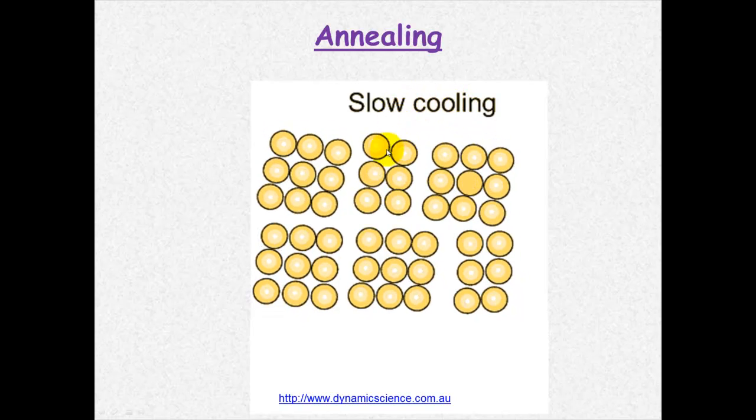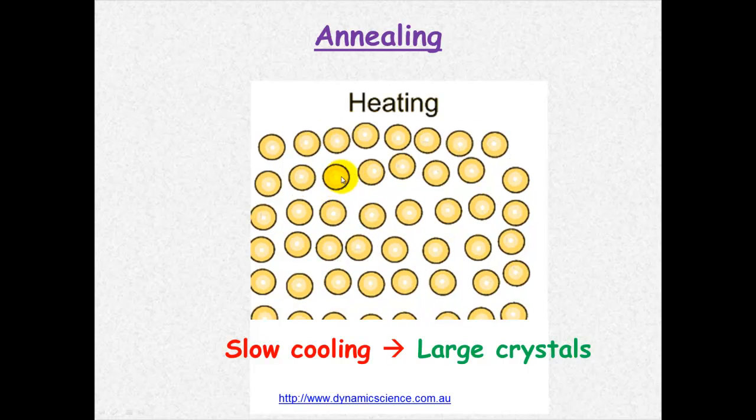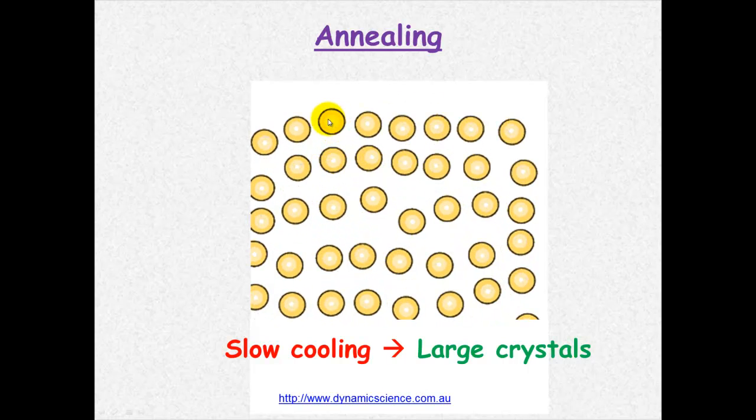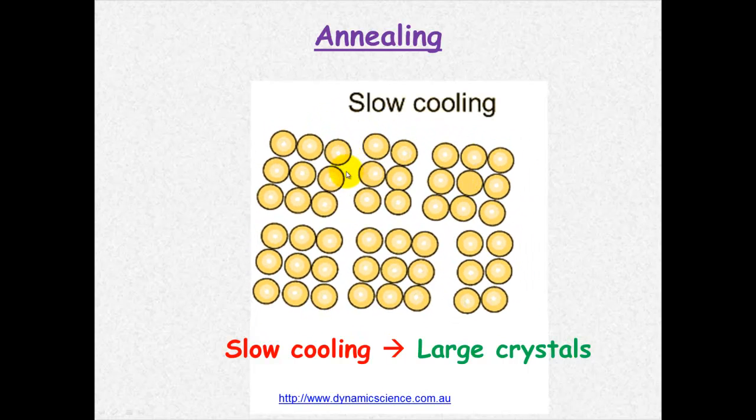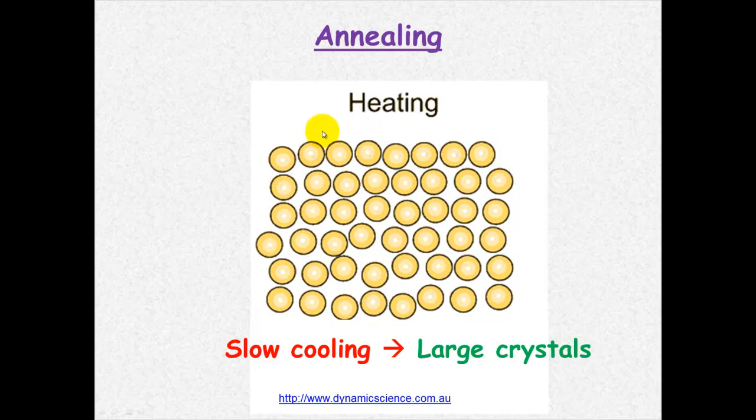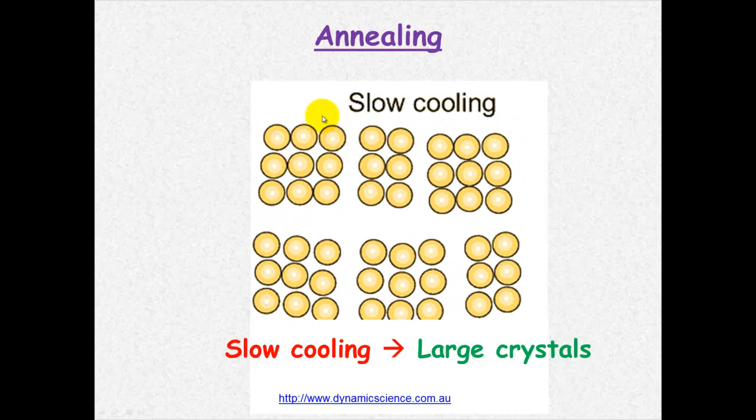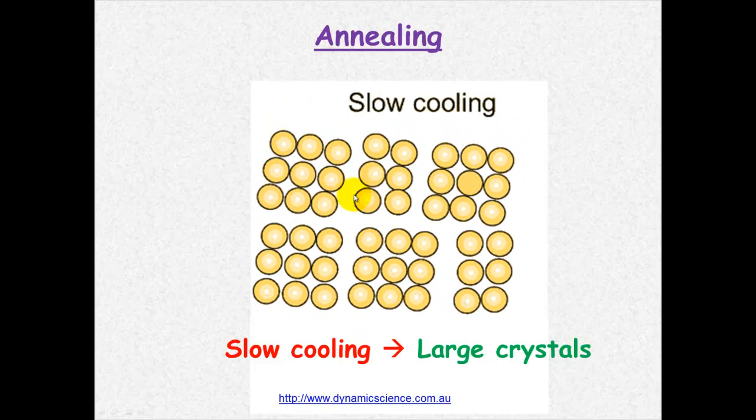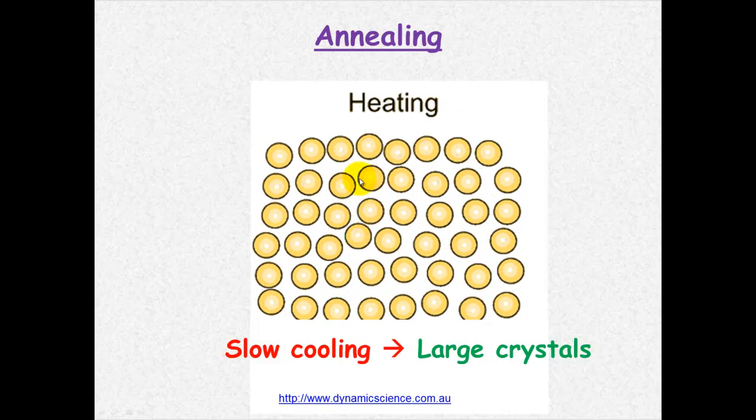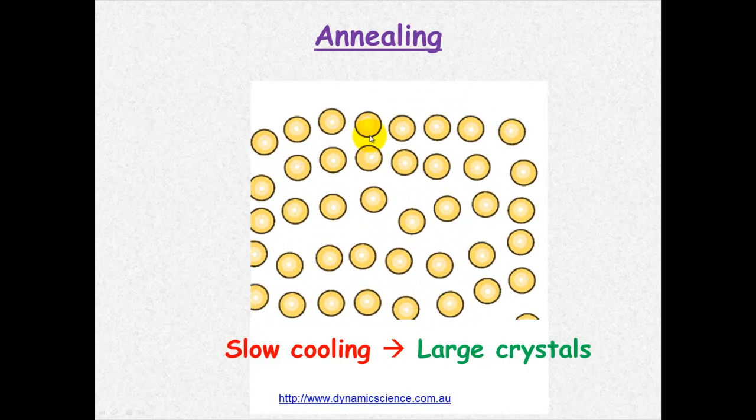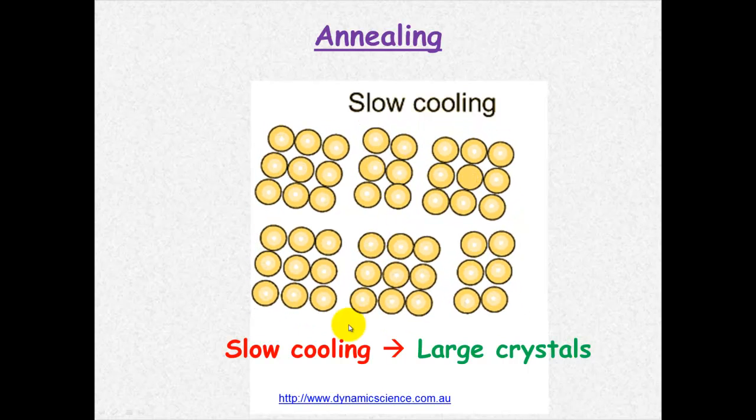We have got slow cooling here and we have got larger crystals forming. When we heat, these cations move apart from one another because they have got more energy. But when you cool them down slowly, they form crystalline structures. Slow cooling allows larger crystals to form.